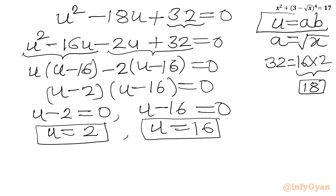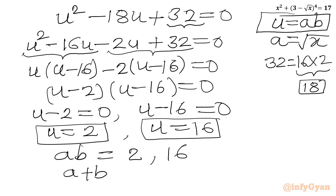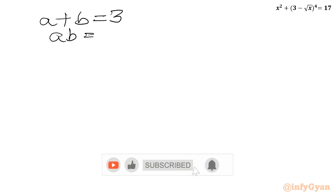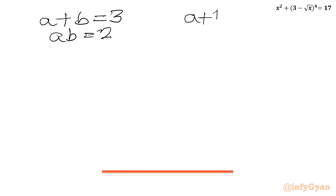Since u equals ab, we have ab equals 2 or ab equals 16. Combined with equation 1 (a plus b equals 3), this generates two systems: system one has a plus b equals 3 with ab equals 2, and system two has a plus b equals 3 with ab equals 16.